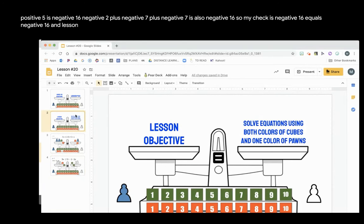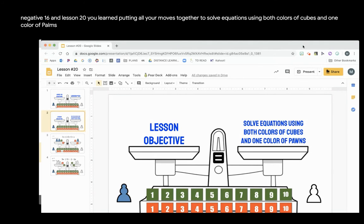In lesson 20 you learned putting all your moves together to solve equations using both colors of cubes and one color of pawns.